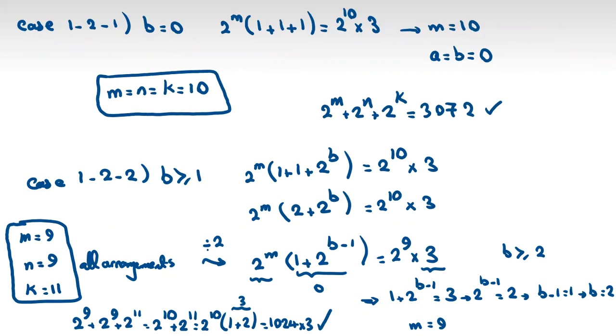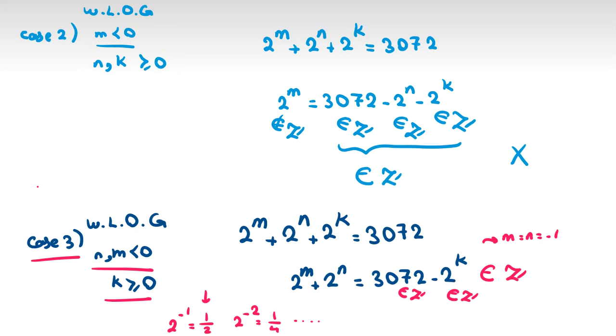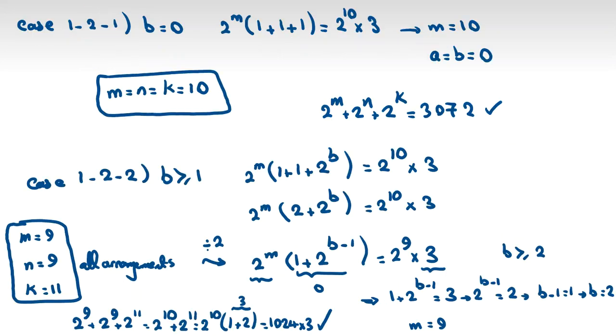We found two types of answers. Writing all solutions: m, n, k equals (10, 10, 10), and the permutations of (9, 9, 11): that is (9, 9, 11), (9, 11, 9), and (11, 9, 9). So we found four answers for this problem.